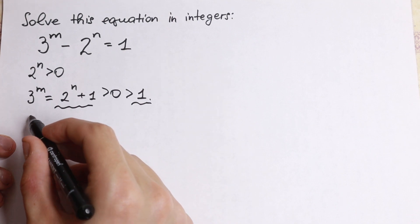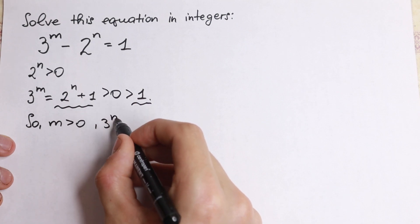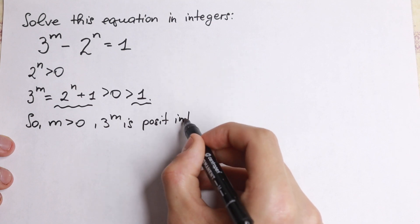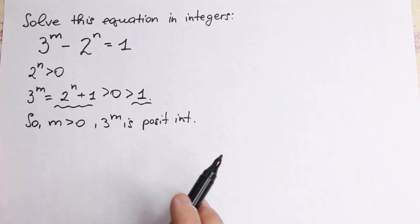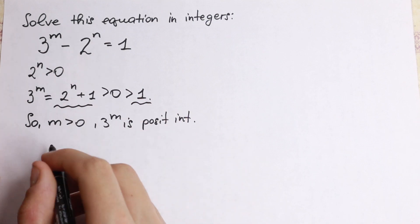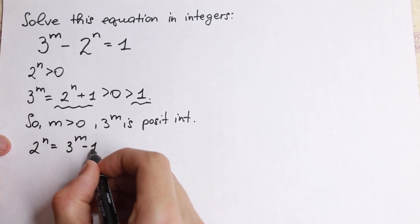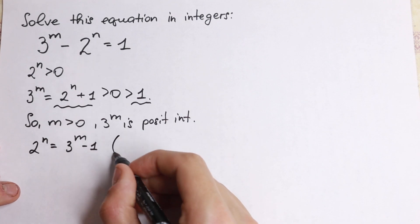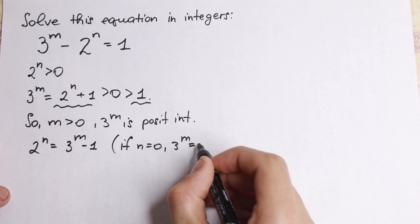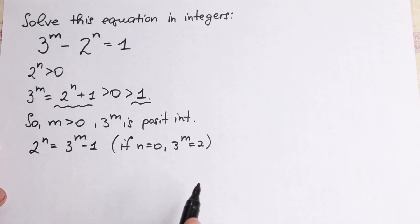So as you can see, m is greater than 0, and 3 to the power m is a positive integer. Let's work with it. Let's express 2 to the n: so 2 to the n equal to 3 to the m minus 1. If n is equal to 0, then we will have 3 to the m equal to 2, which is of course not an integer power, so n equal to 0 is not our case.